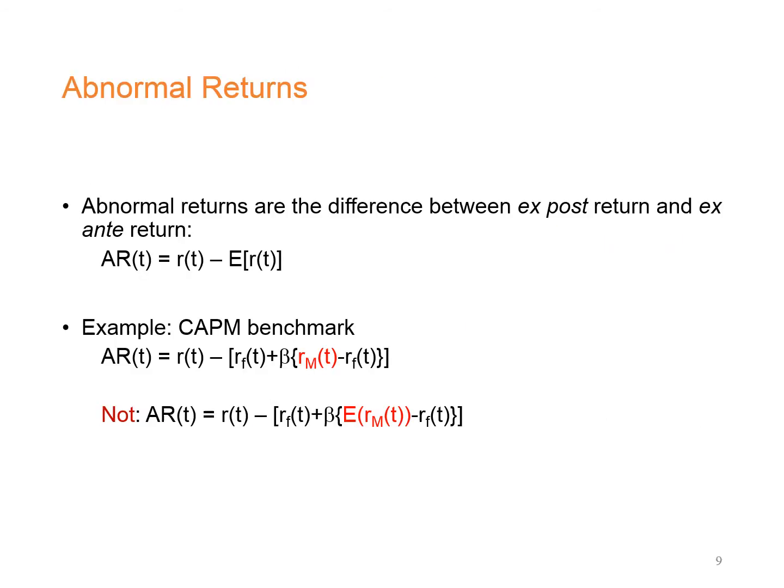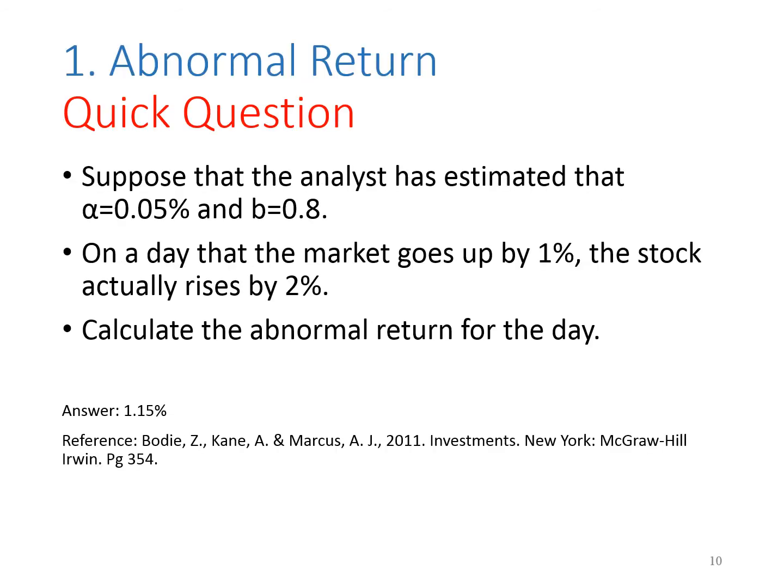The benchmark can also be estimated using an asset pricing model such as CAPM or the Fama and French three-factor model. Abnormal return can be defined as the difference between ex-post return and ex-ante return: AR_t = R_t − E(R_t), where R_t is the actual ex-post return and E(R_t) is the expected ex-ante return estimated from CAPM. For example, if the ex-ante return is 0.05% + 0.8 × 1% = 0.85%, and the actual return is 2%, then the abnormal return is 2% − 0.85% = 1.15%.